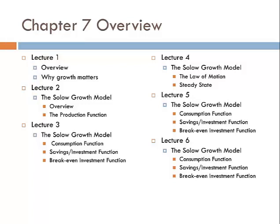In this first lecture, we're going to talk about why growth matters. Then in lecture 2, we'll give an overview of the Solow Growth Model so you can see what all the pieces look like. It's a little like putting a puzzle together — lecture 2 gives you the picture on the box and the first piece, which is the production function. Then in lectures 3, 4, and 5, we'll continue adding pieces to the puzzle, and finally put it all together and talk about how the Solow Growth Model comes to what we call a steady state.